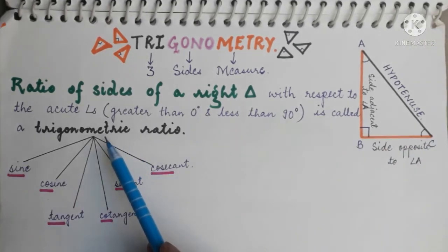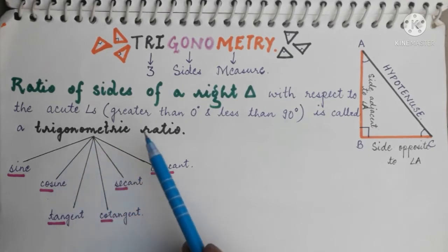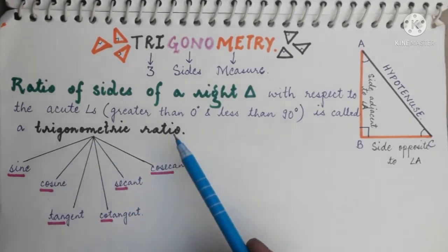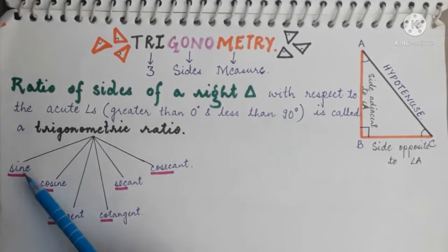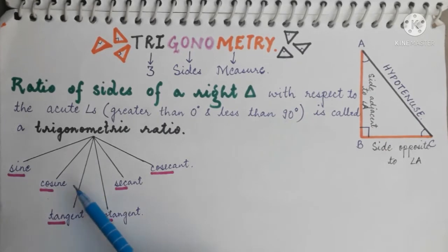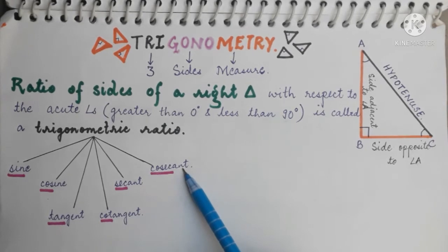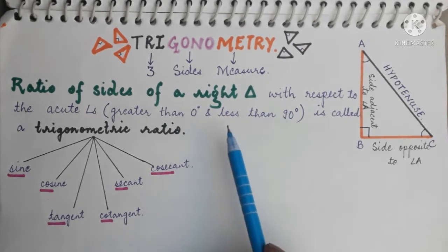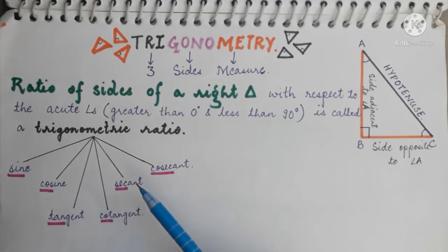Now let's see the names of the different types of trigonometric ratios. The trigonometric ratios are: sine, cosine, tangent, cotangent, secant, and cosecant. We will now see what each of these trigonometric ratios means.